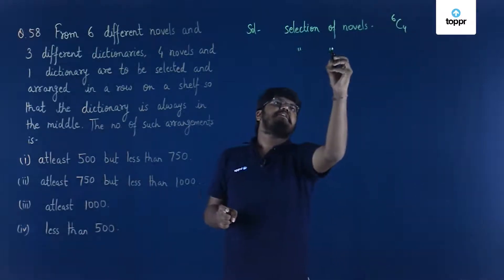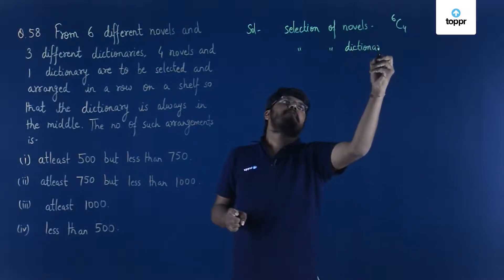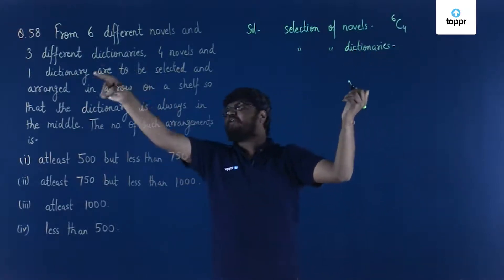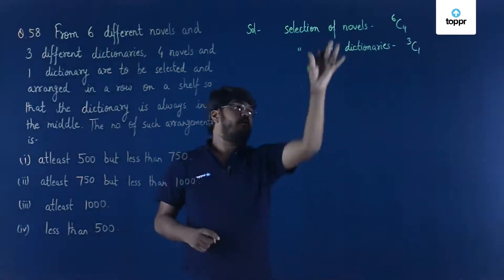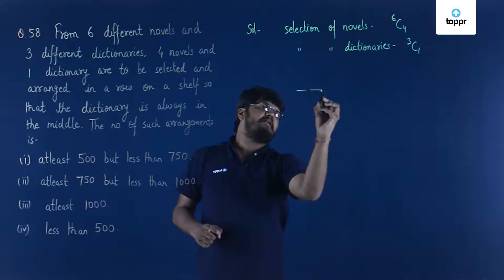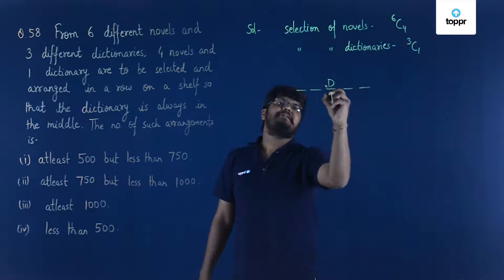Now, let's talk about selection of dictionaries. Since there is only one to be selected out of the three, so 3C1. Now, after the selections, they have to be arranged on a shelf in such a way that the dictionary is always in the middle.